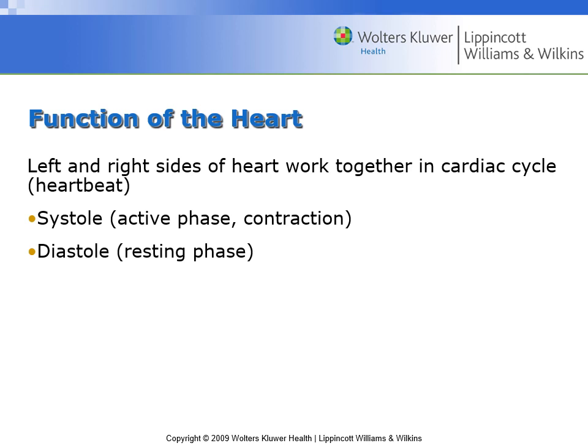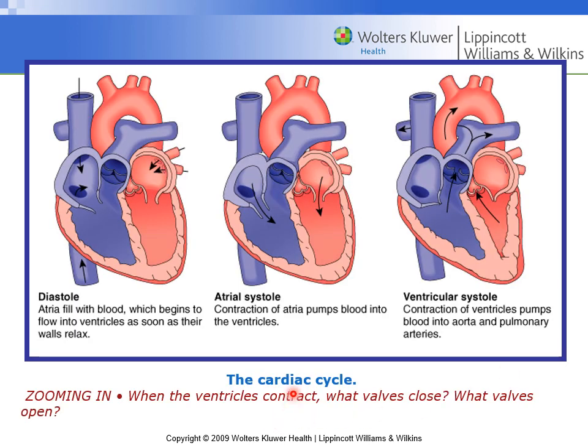The functions of the heart include pumping action, both to the lungs and to the systemic circulation. The left and right sides work together in a cardiac cycle, known as the heartbeat. Systole is the active phase involving contraction or squeezing; diastole is the resting phase. The cardiac cycle consists of diastole, atrial systole, and ventricular systole.